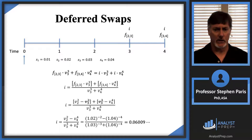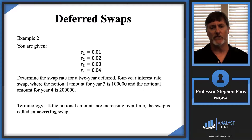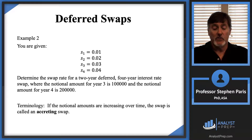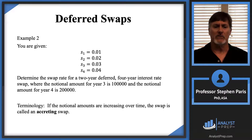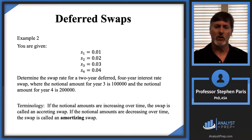Now let's change it up. Same setup, but instead of level notional amounts, assume the notional amount for year three is 100,000 and for year four is 200,000. On terminology: if notional amounts are increasing over time, the swap is called an accreting swap. If notional amounts are decreasing over time — like paying down a loan — it's called an amortizing swap. Be careful: the notional amount 'for year three' is what the interest is based on at the beginning of year three, so it's a time-two value.